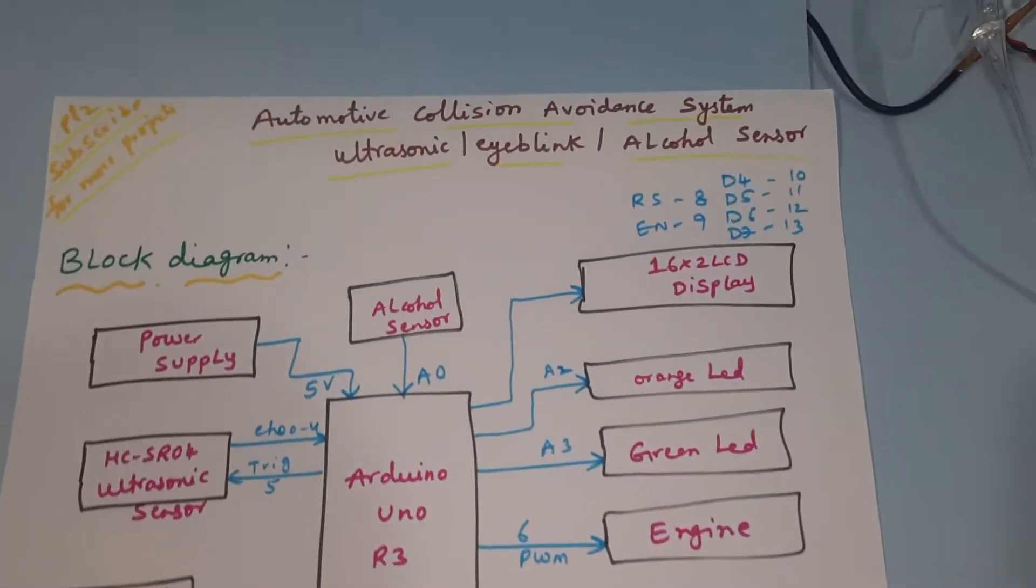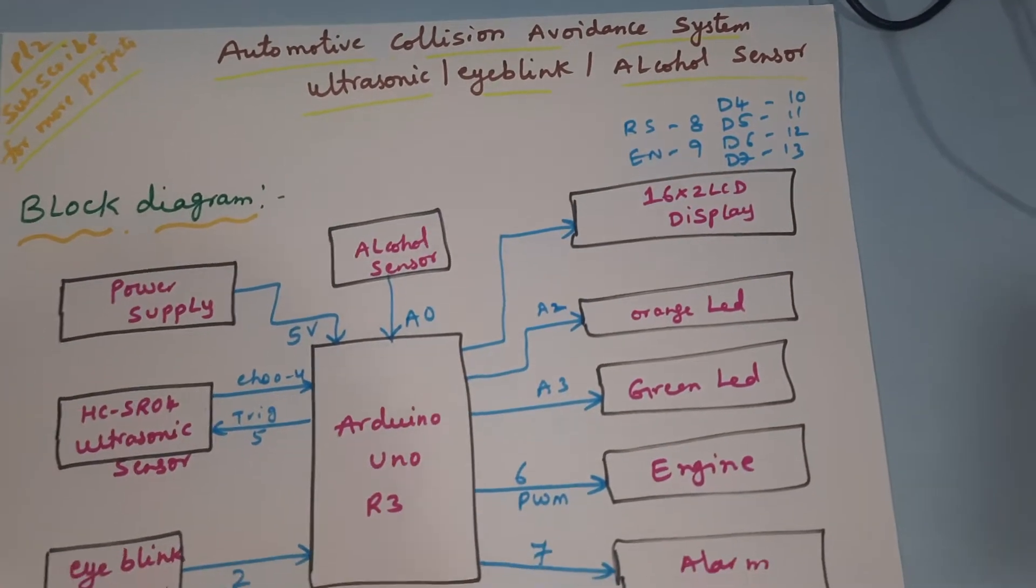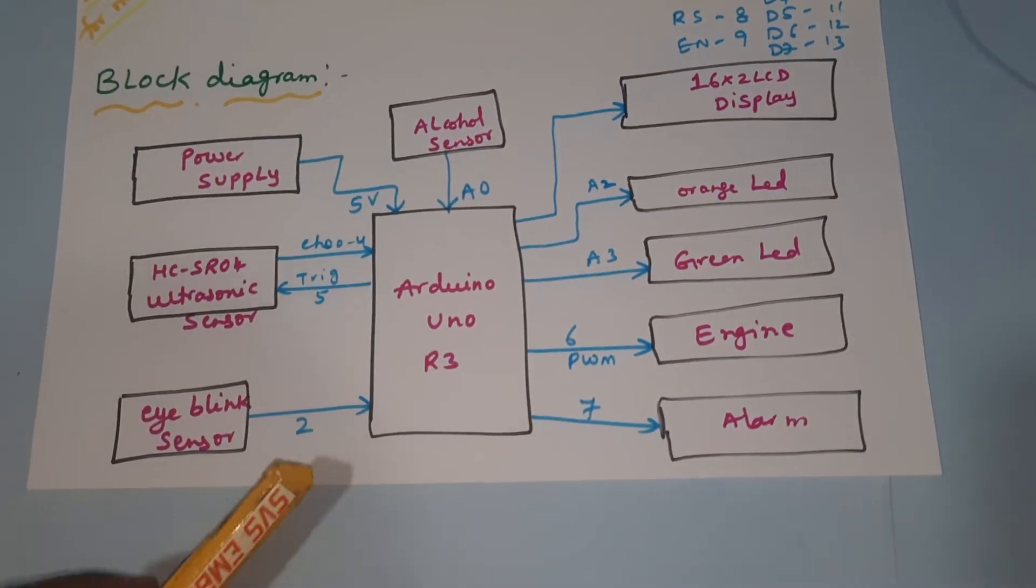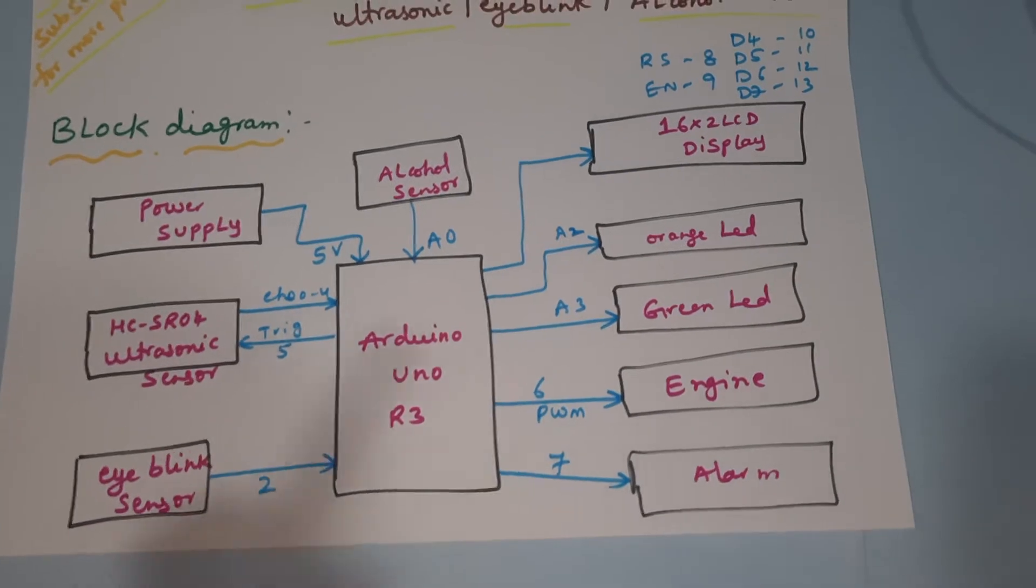Hi, we are from SVS Embedded. The project title is Automotive Collision Avoidance System using ultrasonic sensor, eye blink sensor, and alcohol sensor. Here we are using an Arduino UNO R3 and ultrasonic distance measurement module.